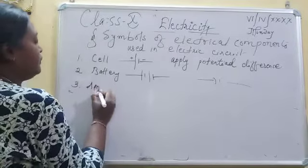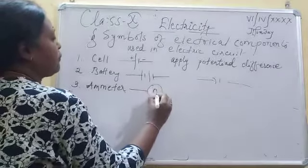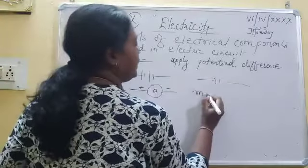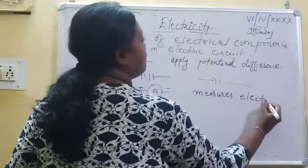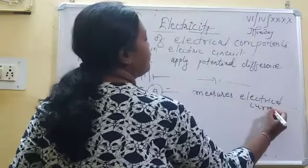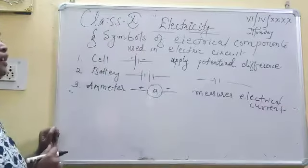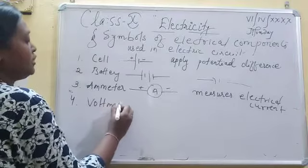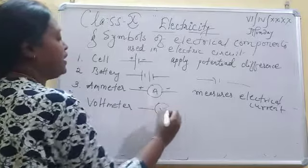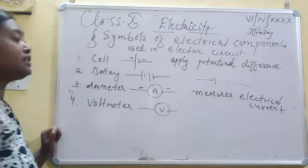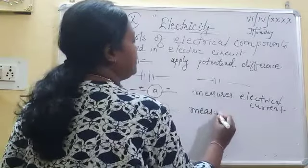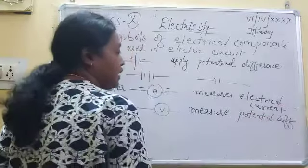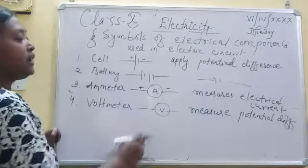Next is the ammeter. What is the function of the ammeter? It measures electric current — how much electrical current is flowing through a circuit is measured by the ammeter. Next is the voltmeter. The function of the voltmeter is to measure the potential difference. It measures the magnitude of potential difference — that is, how much potential is across the conductor is measured by the voltmeter.